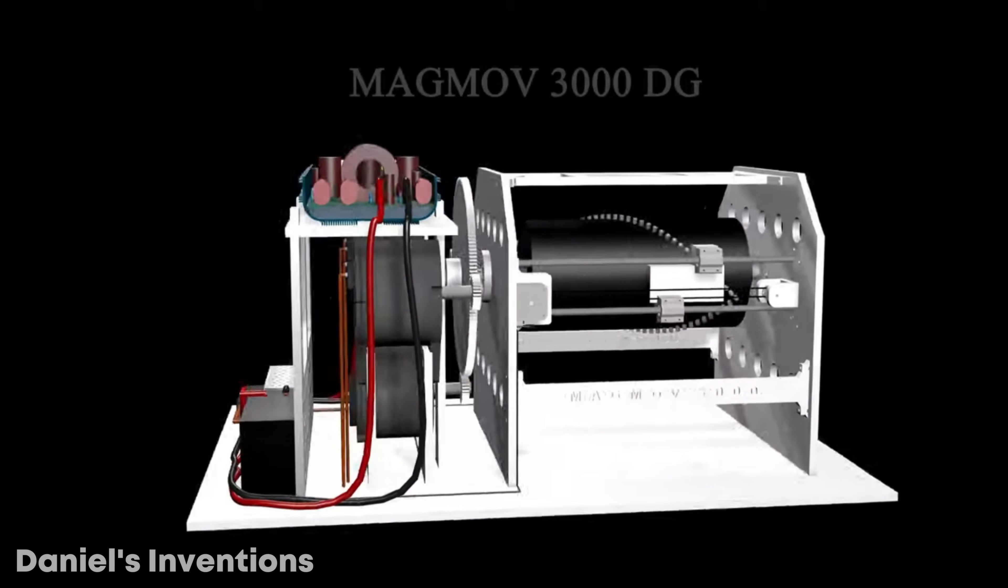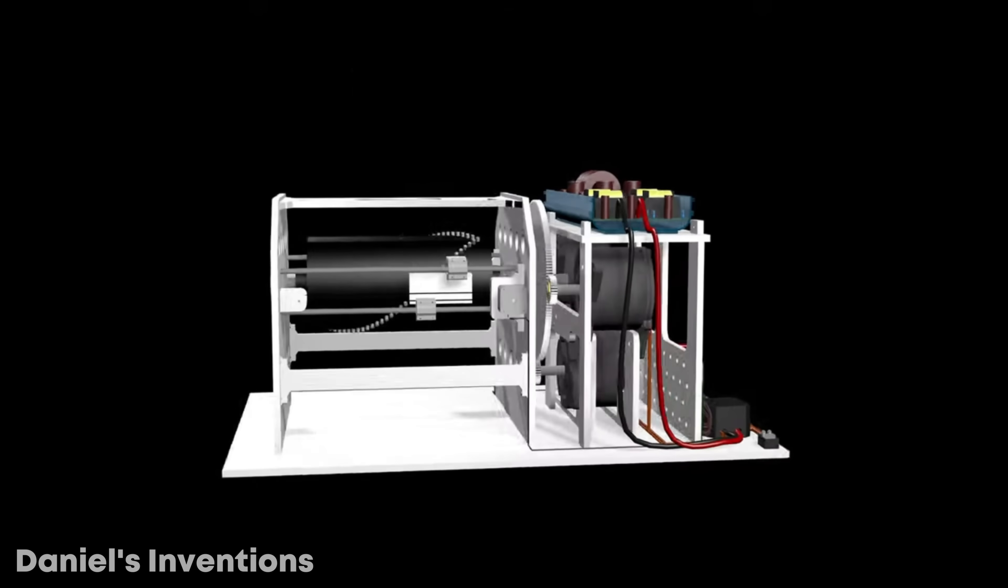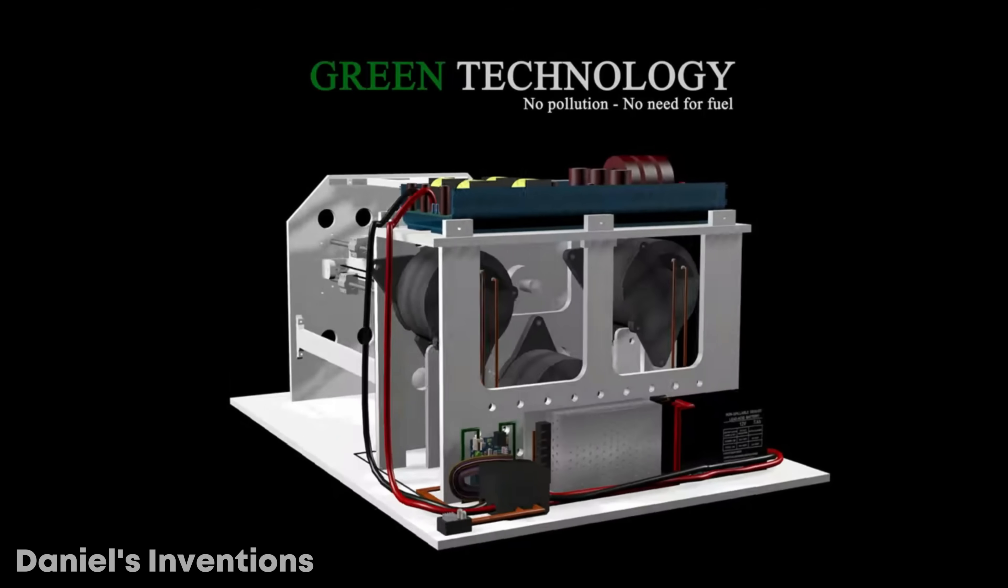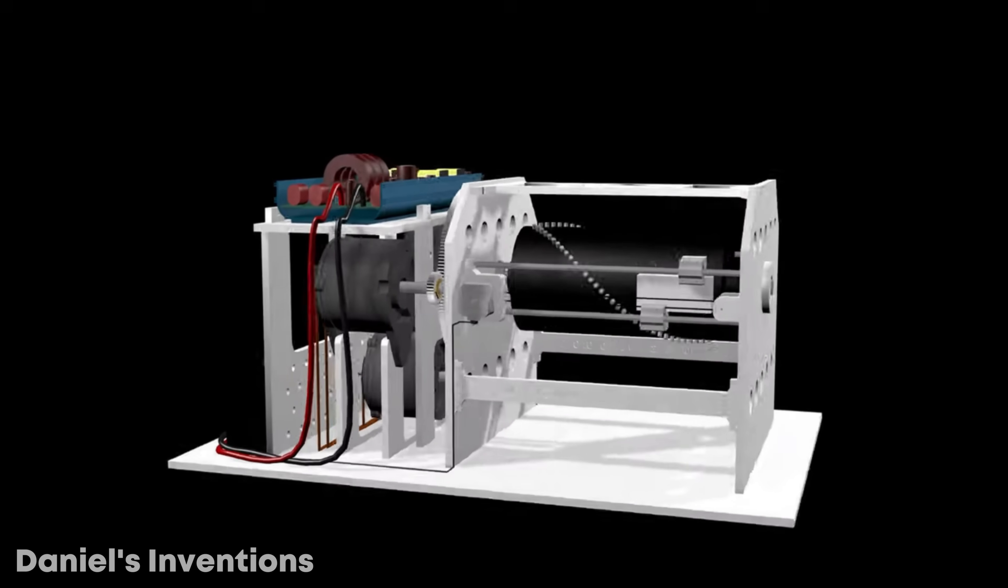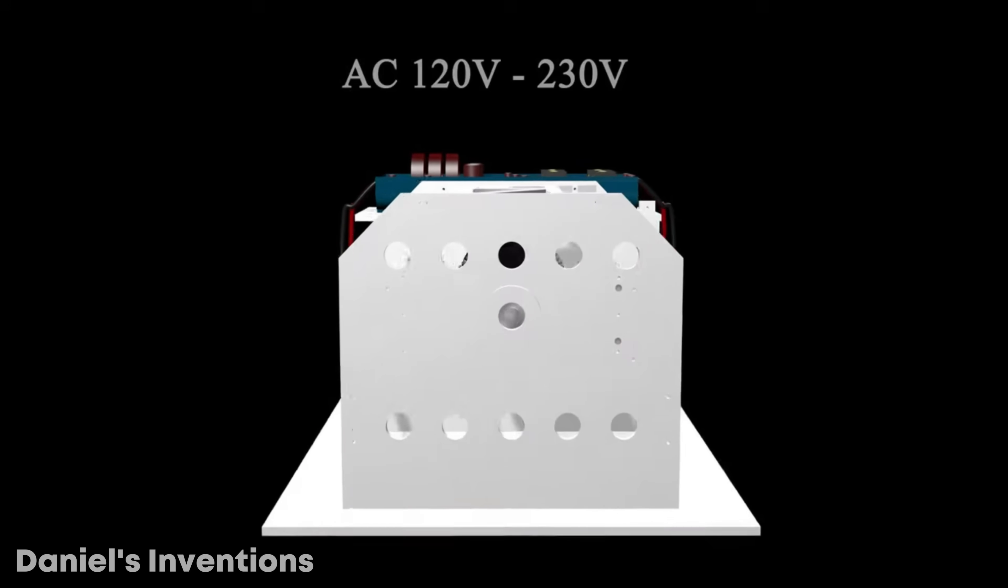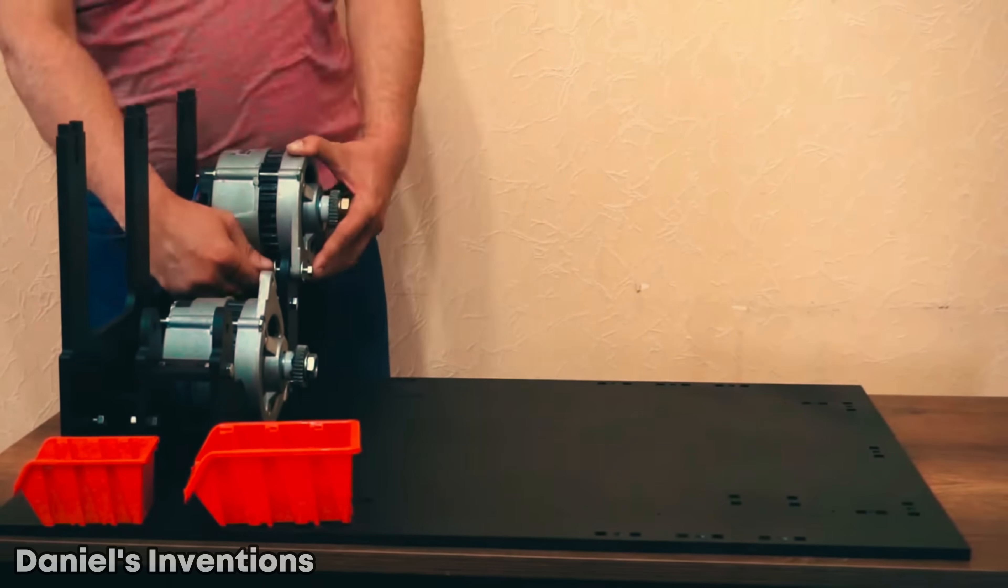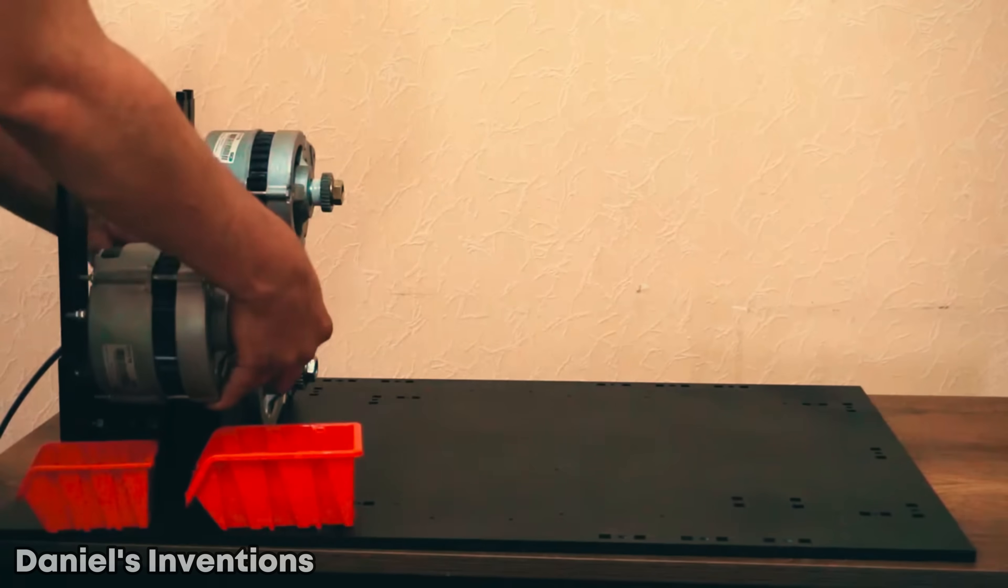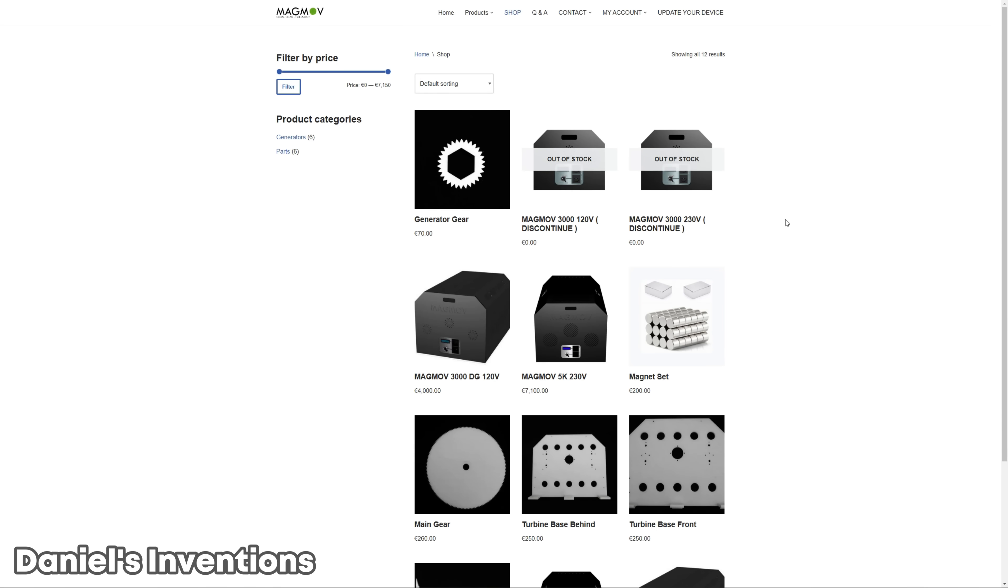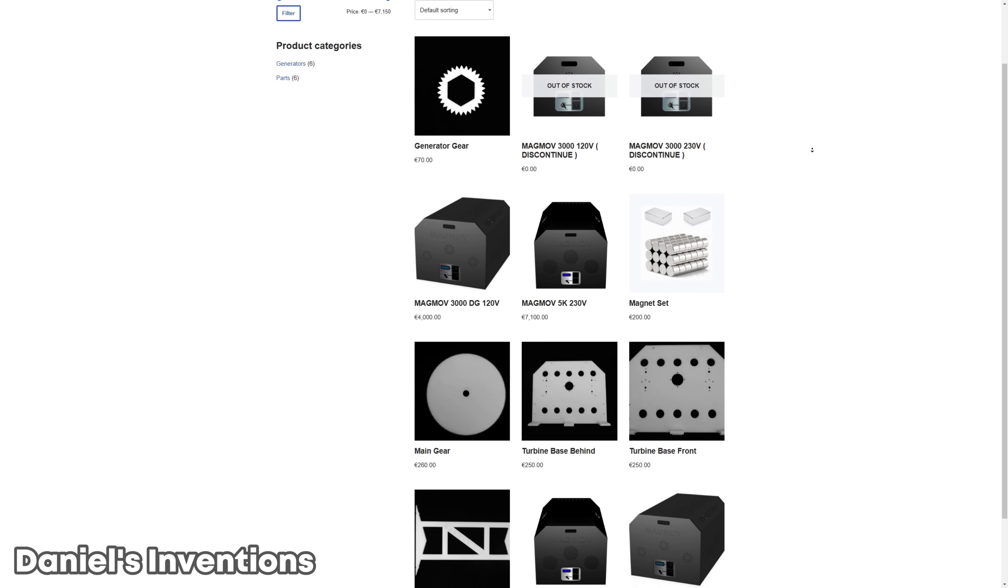This self-running permanent magnet motor is for sale on the internet. One could purchase the basic 3000 watt self-running generator starting at 4000 euros and up. An animation on the internet by the inventor shows a rotor with a magnetic configuration and two stepper motors with actuator magnets. Supposedly, this configuration generates enough torque to turn three car alternators to produce enough power to power your house and recharge its own battery.